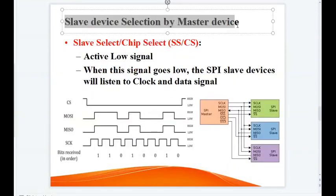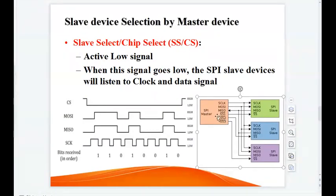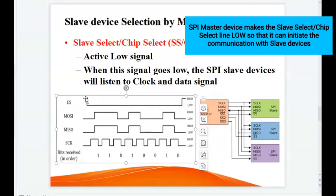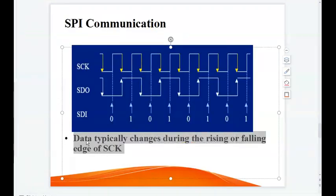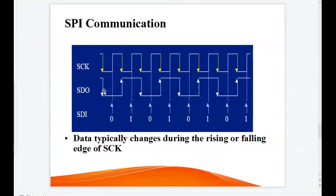Slave device selection by master device: in SPI protocol, the SPI master uses the slave select line to communicate with a slave device. As shown in the waveform, the chip select or slave select line goes low, and once it is low, the SPI master starts communicating with the SPI slave devices. The data typically changes during the rising or falling edge of the clock — the data on the SDO line changes during the falling edge of the clock, while the data is sampled on the SDI line at the rising edge of the clock.